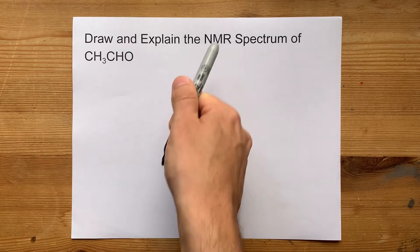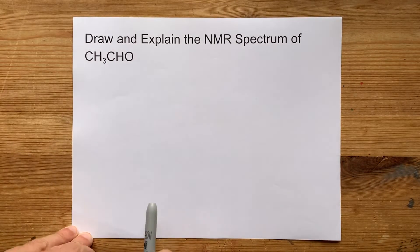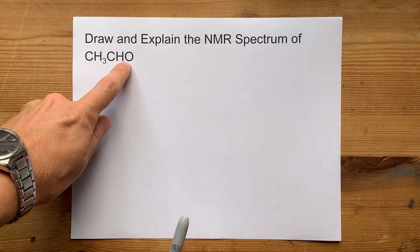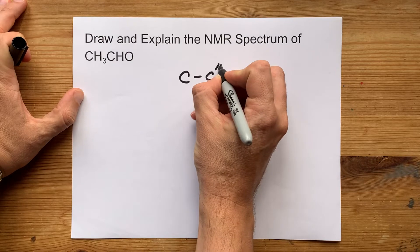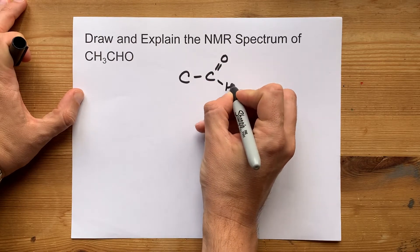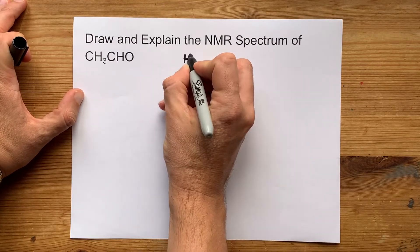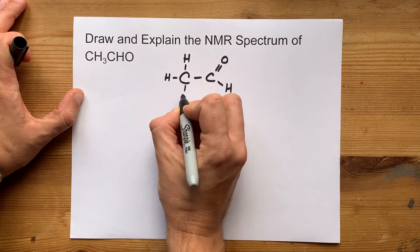Let's draw and explain the NMR spectrum for acetaldehyde, that's CH3CHO. If I was to draw the Lewis structure for that, you're going to have an aldehyde group on one of the carbons. The other carbon of the chain is a CH3 group.